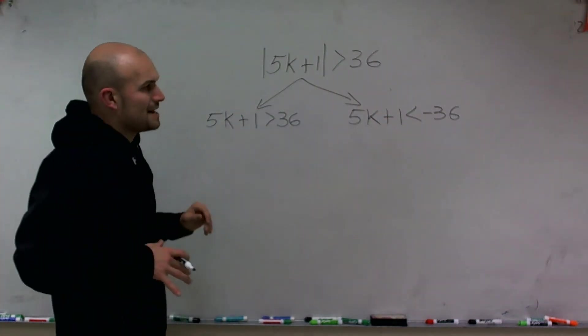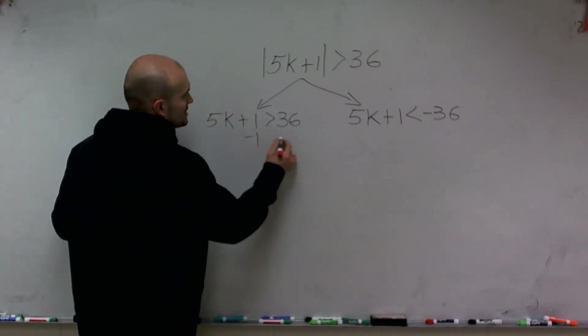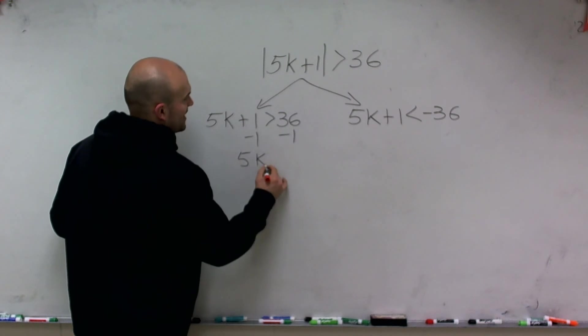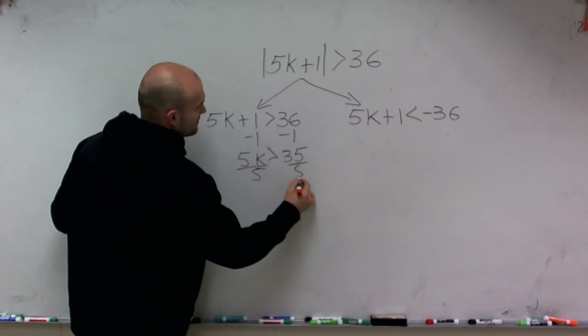Now that I have my absolute values isolated, now what I can simply do is just solve for each variable. So I subtract 1 on both sides, and I get 5k is greater than 35, divide by 5, and I get k has to be greater than 7.